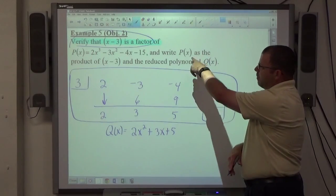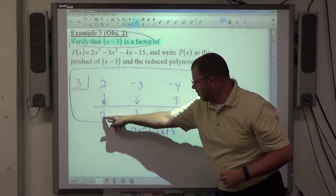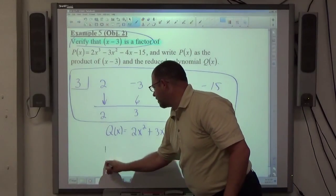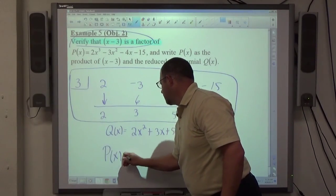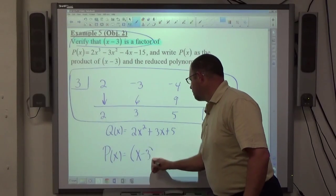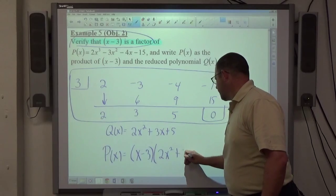And then what they want us to do is write P(x) as the product of x minus 3 and the reduced polynomial. I can see my quotient here, 2x² + 3x + 5. And they want me to write P(x) equal to our divisor, which is x minus 3, being multiplied by our quotient, 2x² + 3x + 5.